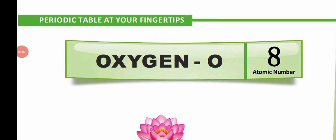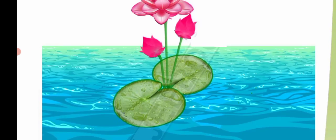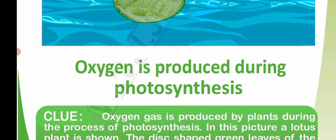Hello guys, today I will discuss about oxygen. Oxygen has atomic number eight and is represented by O. I will give some clues regarding the atomic number of oxygen in this video.